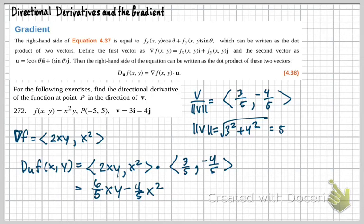Now we did have it at a particular point. So that's what it would be in general. But at this particular point, we can now plug in our X and our Y. So now I would write below DU F, negative 5, 5. And that would be 6 fifths parenthesis negative 5 times 5 minus 4 fifths. And my X squared is going to be negative 5 squared.